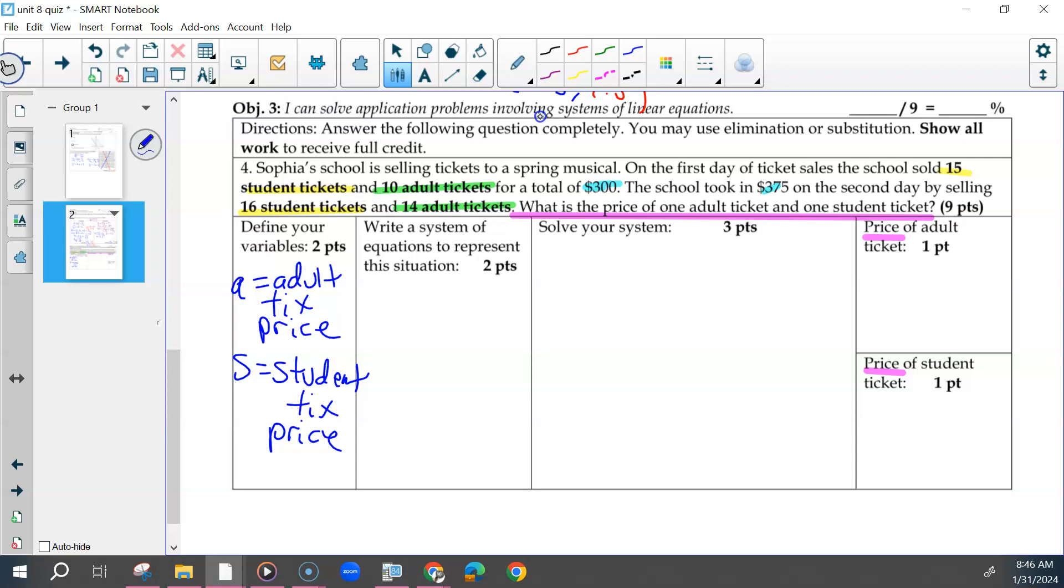You had six numbers, so you should have been using all six. And those two equations would have been 15S plus 10A equals 300 and 16S plus 14A equals 375. Setting those both up correctly were both worth one point. Then you had choices of how to solve your system. How you did that was up to you.